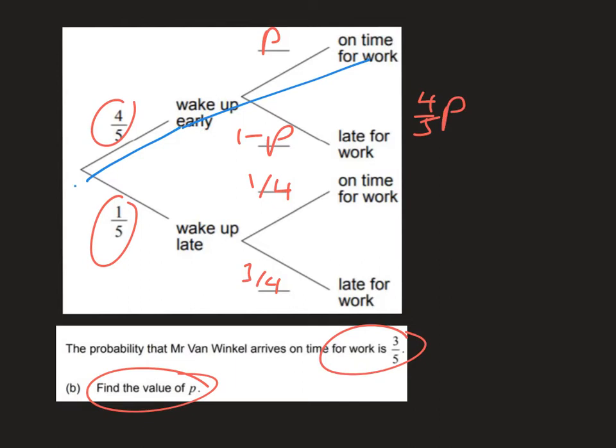Now the other option is that he could wake up late and still be on time for work. And the probability of doing that is a fifth times a quarter. And we know that those two outcomes combined have a probability of three-fifths.